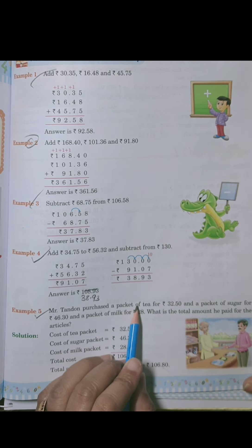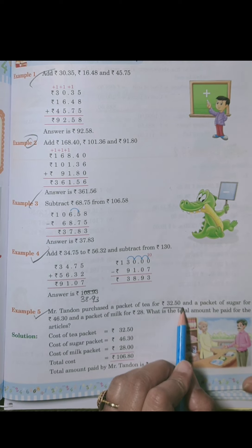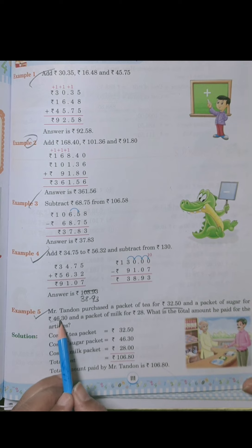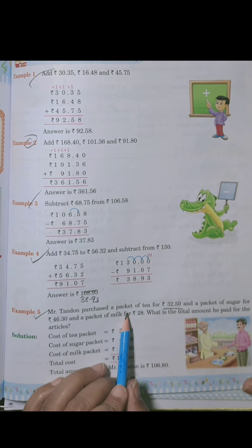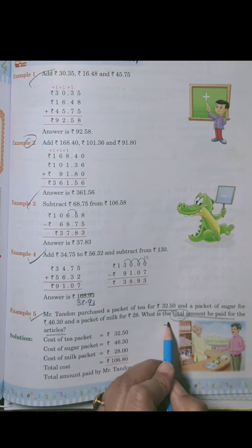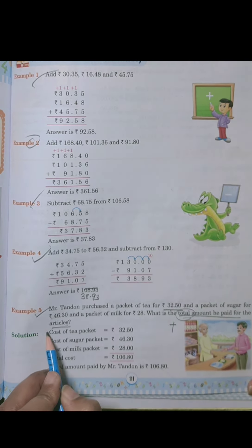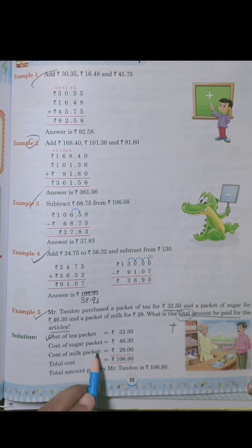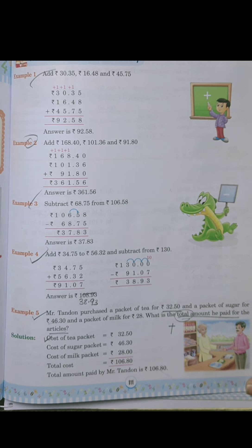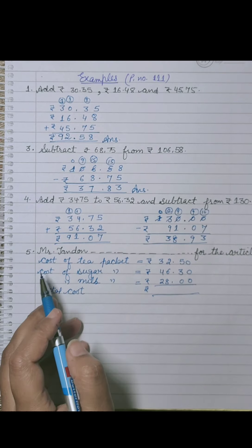Mr. Tundon purchased a packet of tea for rupees 32.50 and a packet of sugar for 46 rupees 30 and a packet of milk for rupees 28. What is the total amount he paid for the articles? Total amount means we will add these values. So we first write the statement: cost of tea packet, cost of sugar packet, cost of milk packet, then total cost.